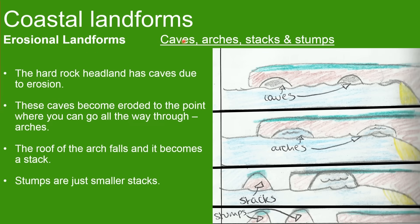The next erosional landform is caves, arches, stacks and stumps. A headland has caves due to erosion. These caves can be eroded to the point where you can pass all the way through, forming an arch. When the roof of the arch falls it becomes a stack, and stumps are just small stacks.